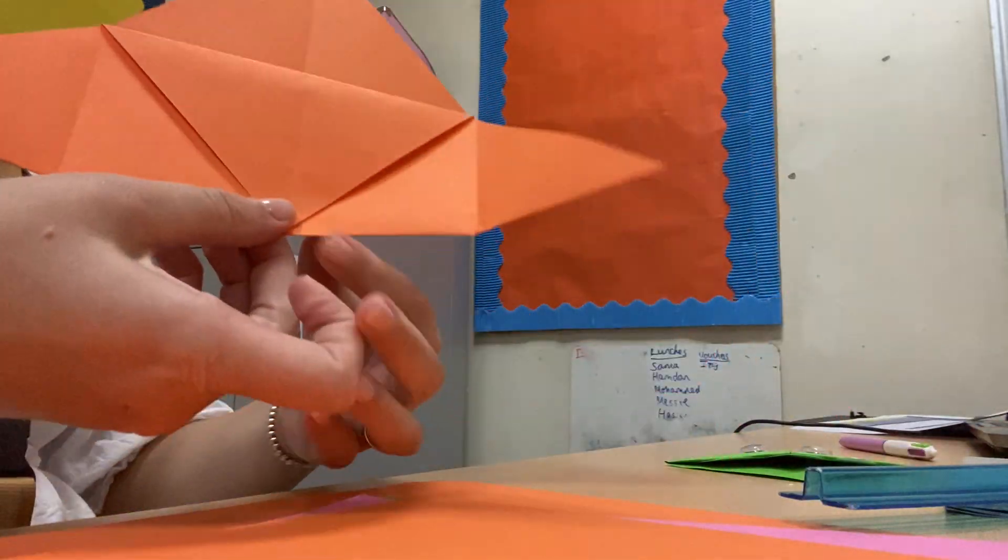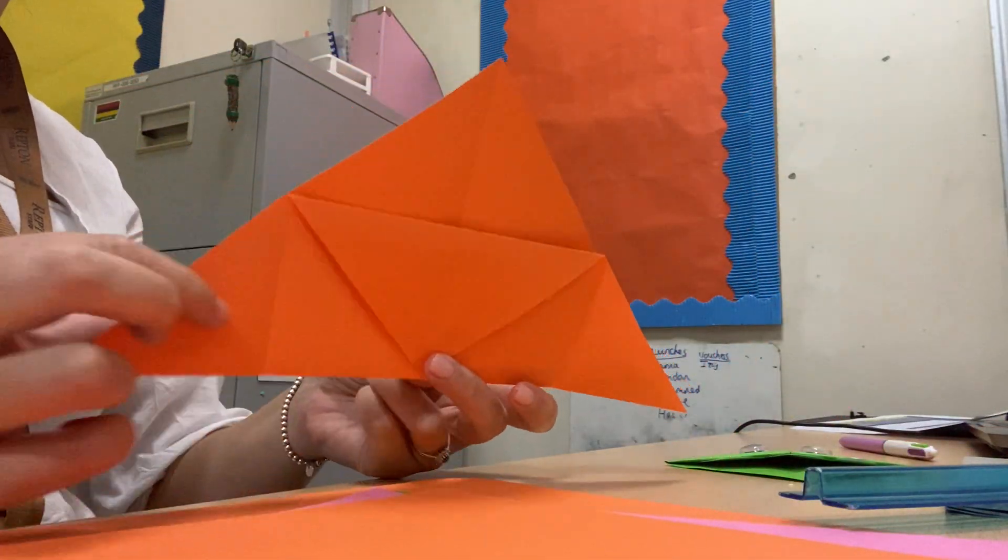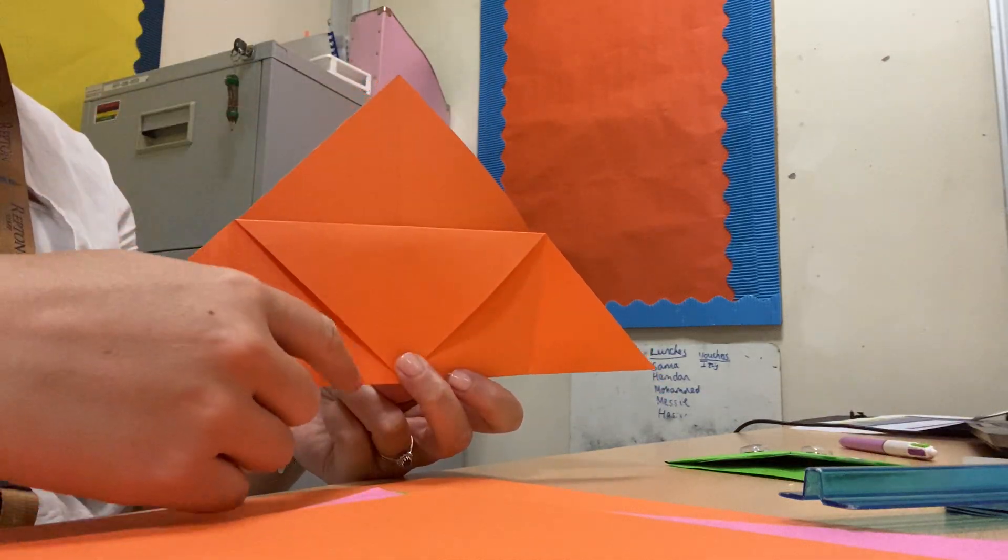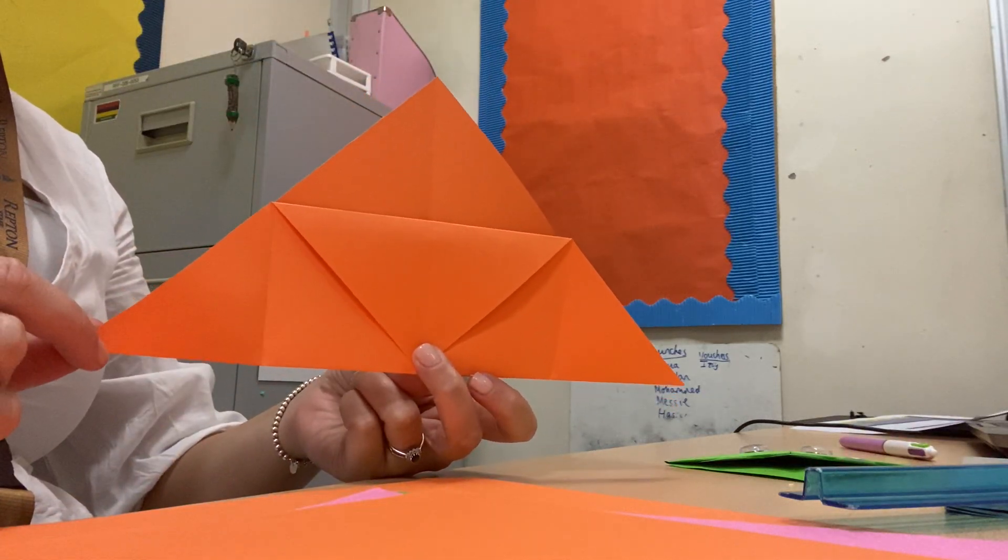So you've got a fold line. So you've got this shape now. So you've got this at the top. The front triangles can come down, and we've got our other fold lines.